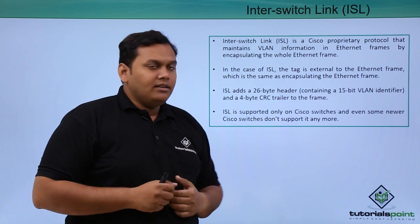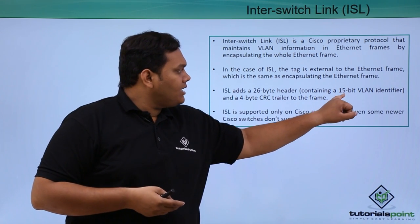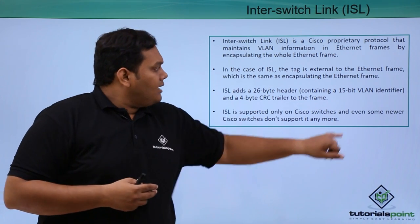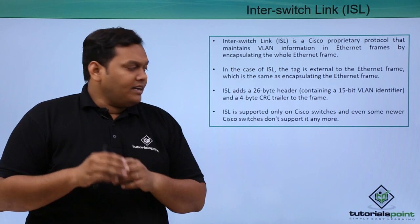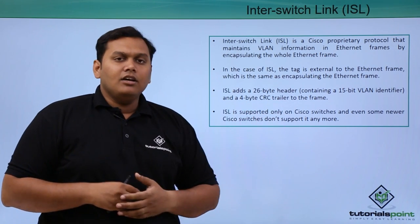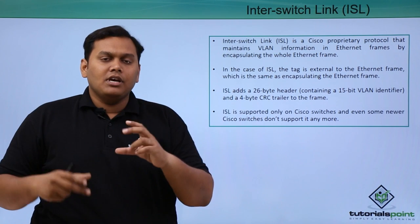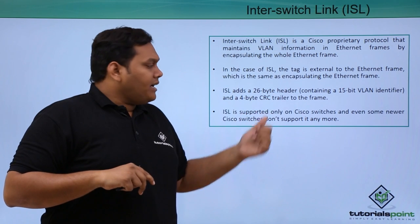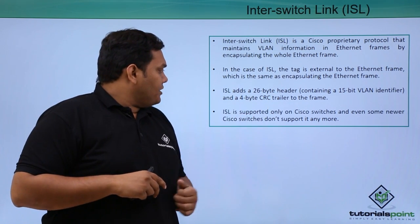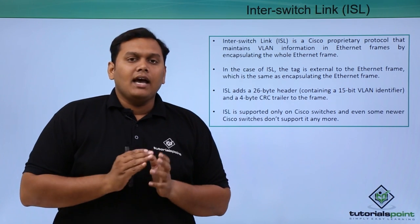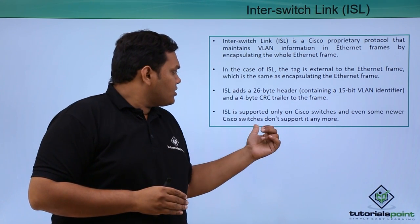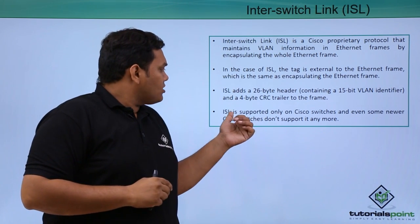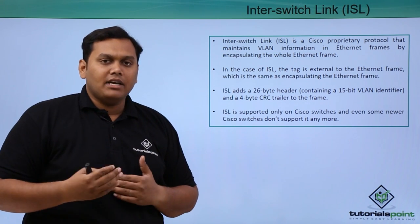ISL adds a 26-byte header containing a 15-bit VLAN identifier, and also a 4-byte CRC trailer to the frame. In the encapsulation process, a header of 26 bytes and a trailer of 4 bytes are added. ISL is supported only on Cisco switches, and notably some newer Cisco switches do not support it — older Cisco switches have the option of configuring ISL, but newer switches do not.